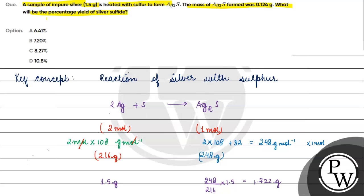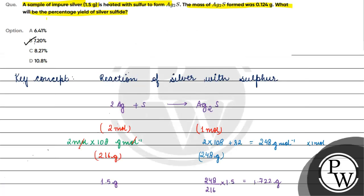Percentage yield is basically equals to observed value - that was 0.124 grams - by the calculated value, which is 1.722 grams, into 100. The percentage yield is 7.2%. The correct answer for this question will be option B. I hope you understood it well, thank you, all the best.